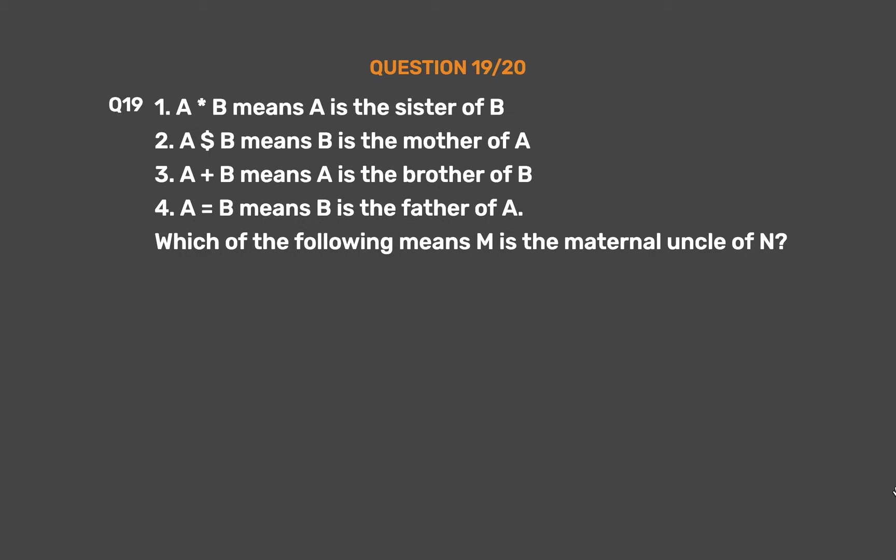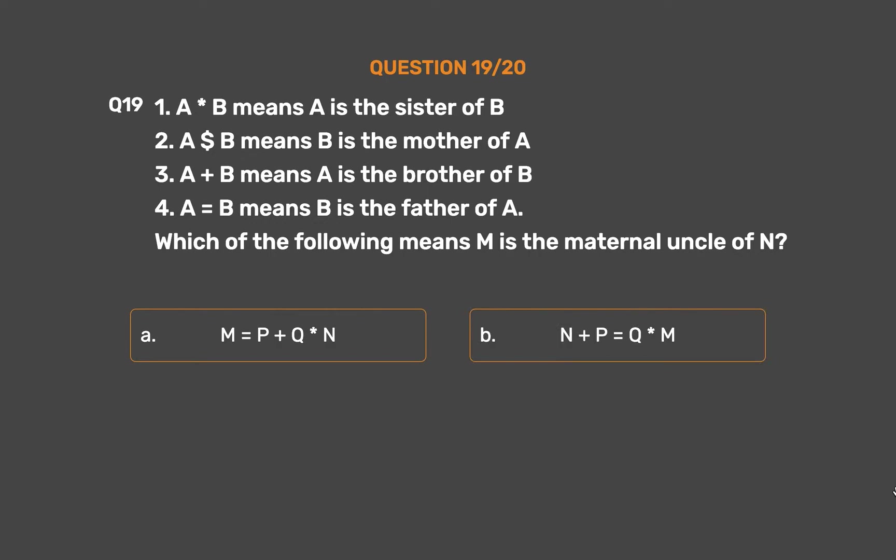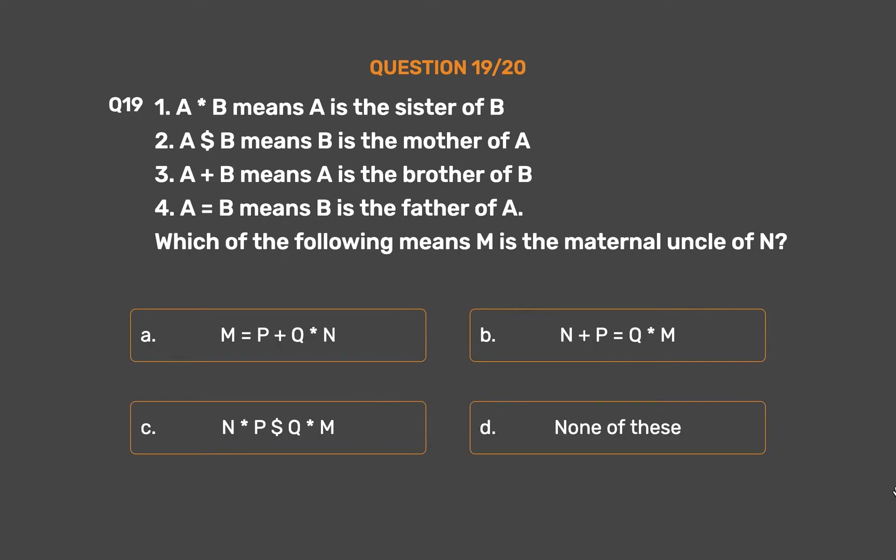Question number 19. Given: (1) A * B means A is the sister of B; (2) A $ B means B is the mother of A; (3) A + B means A is the brother of B; (4) A = B means B is the father of A. Which of the following means M is the maternal uncle of N? Option A: M = P + Q * N. Option B: N + P = Q * M. Option C: N * P $ Q * M. Option D: None of these.